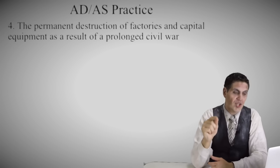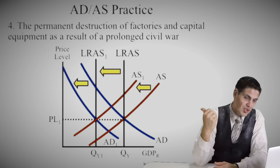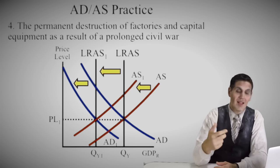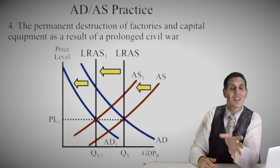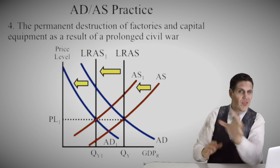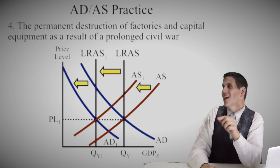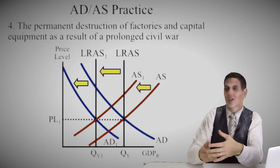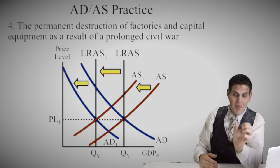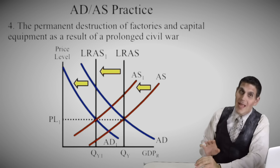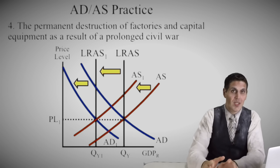Number four: a permanent destruction of factories and capital — think of war-torn countries like Syria. Aggregate supply would shift to the left and long-run supply would shift to the left. It's likely aggregate demand would also shift to the left because workers don't have jobs or income. This is the opposite of scenario three — the entire economy would decrease, or think of the production possibilities curve shifting inward. We cannot produce as much as before because the factories are destroyed. There are really only a few things that can happen: the economy adjusts back to full employment with an inflationary gap, or with a recessionary gap, or it shifts all the way out when there's economic growth, or it shifts left when something permanently destroys resources.